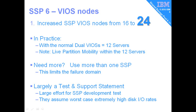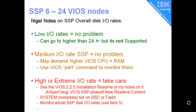Now, the 24 is largely a testing and support statement. You can't phone up and ask for support if you've got more than 24. It's a large effort for the Shared Storage Pool development team — when they're doing the testing of a new release with 24 nodes, they're generating extreme high disk I/O rates. This foil says Nigel's Notes, so this is my opinion, not an IBM statement. In my systems, I have very low I/O rates and I can actually get higher than 24, but of course I will not be supported if I had 34 in my Shared Storage Pool.